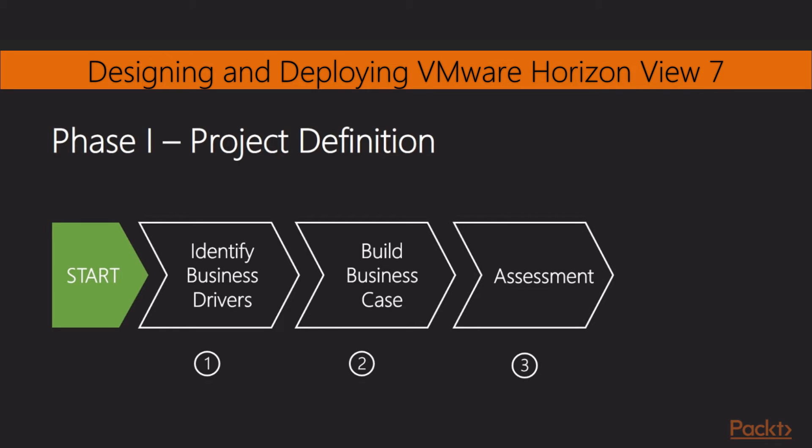Once you've built your business case and validated it against your strategy, and identified that there is a requirement for a new way of delivering a desktop environment, then the next stage is to run an assessment. So what do we mean by an assessment and what is actually involved? It comes down to several things we are looking for, including examining your current desktop landscape by means of some form of desktop assessment, so you can understand what is currently being delivered, to whom it's being delivered, and more importantly, how resource intensive it is. The assessment is designed to build up a picture of what the current environment actually looks like.